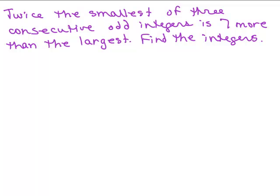All right, this is another consecutive integer problem. Twice the smallest of three consecutive odd integers is seven more than the largest. Find the integers. All right, there's a slight twist here. We're looking for odd integers.